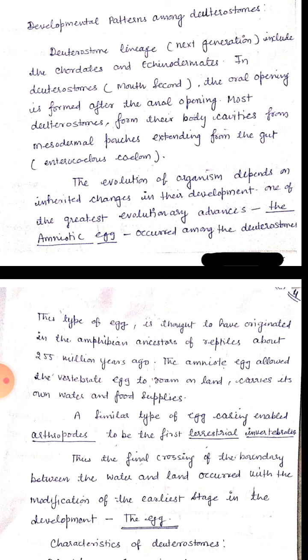A similar type of egg casing enabled arthropods to be the first terrestrial invertebrates. Thus, the final crossing of the boundary between water and land occurs with the modification of the earliest stage in development, that is, the egg.